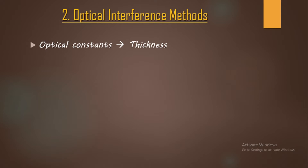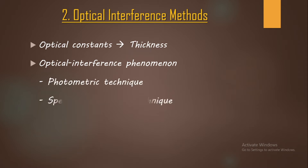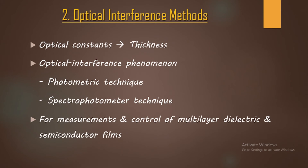Among these methods there are mainly two types: one is the photometric technique and another is the spectrophotometric technique, and both are based on optical interference phenomena. Whereas in the optical absorption method the main preference was for insulator films, here it is with respect to dielectric and semiconductor films.